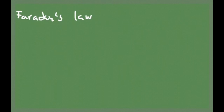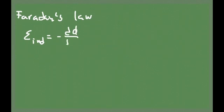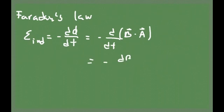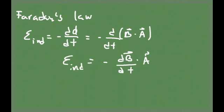The equation that establishes the connection between electric and magnetic field is Faraday's law. What Faraday's law says is that the induced electromotive force in a circuit is the derivative of the flux with respect to time. That flux can be written in terms of the magnetic field and the area of the loop. If the area of the loop is not changing, this equation tells you that the derivative of the magnetic field with respect to time, dot product with A, gives you the electromotive force responsible for the induced current in the circuit.